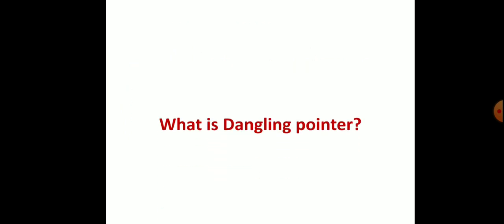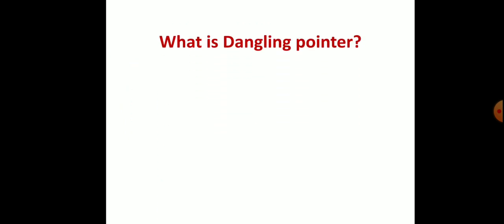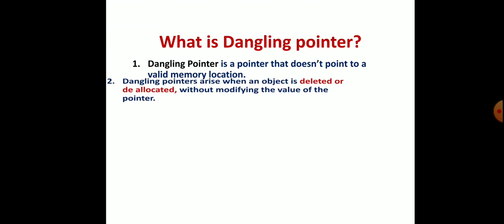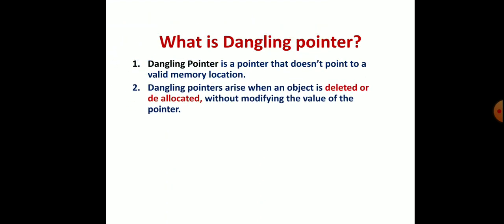What is a dangling pointer? A dangling pointer is a pointer that doesn't point to a valid memory location. Dangling pointers arise when an object is deleted or deallocated. It's more or less like a null pointer, but the difference is it's without modifying the value of the pointer. Hence, the pointer still holds the memory location that has been deallocated.